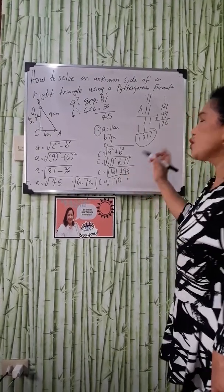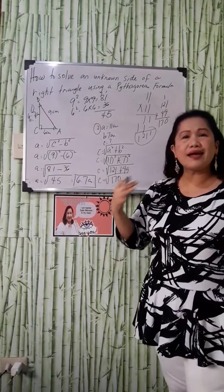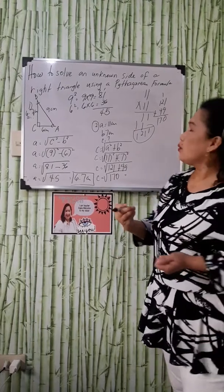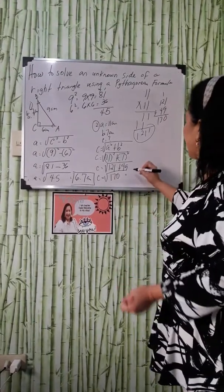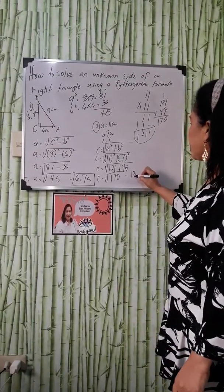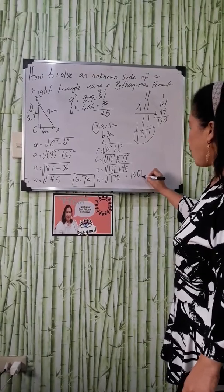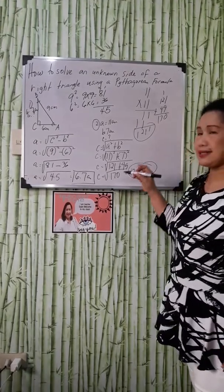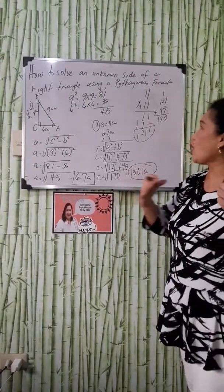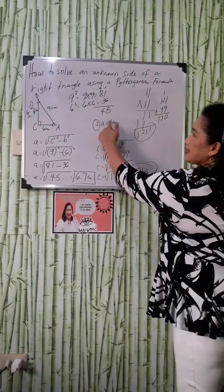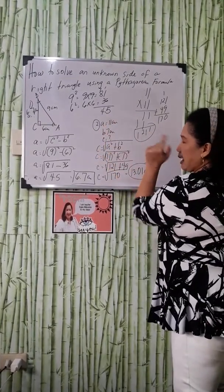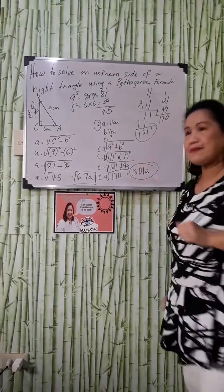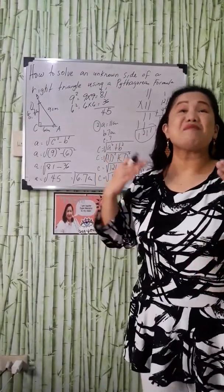If you will get the square root of 170, what is the value there? The square root of 170 in your calculator, that is equal to 13.01 centimeters. This is now the value of side C. Guys, if you are going to compare, A is 11, B is 7 cm, C is 13. Sa tatlo na ito, still 13, the longest side, which is the hypotenuse.